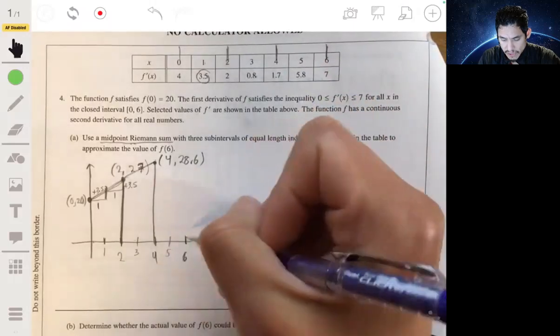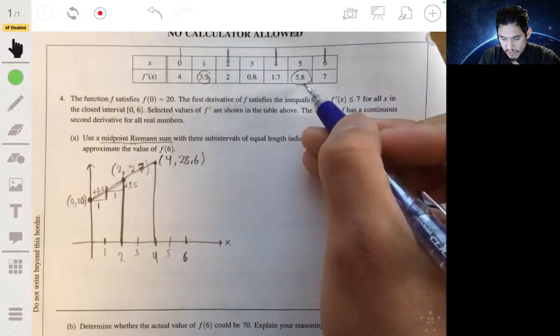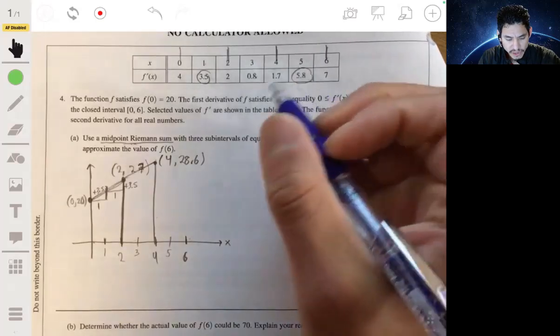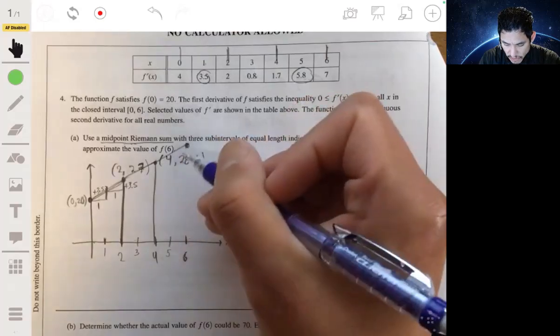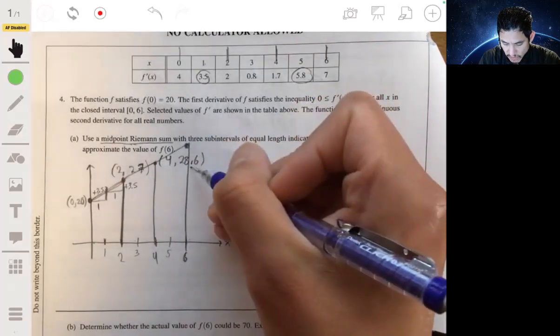And then from 4 to 6, on average, we're increasing by 5.8, and so by 5.8 twice. So from not drawn to scale, at 6, if we increase by 5.8 twice from 28, that would leave us at 5.8 times 2, which is 10...